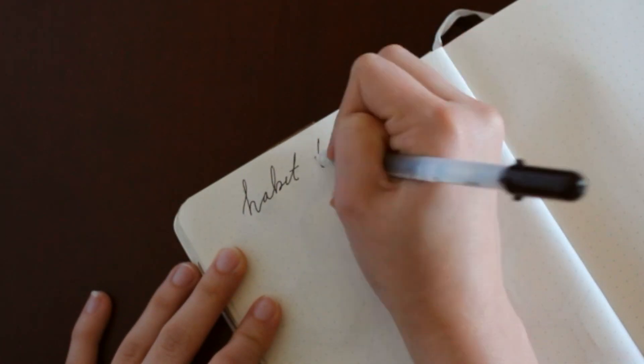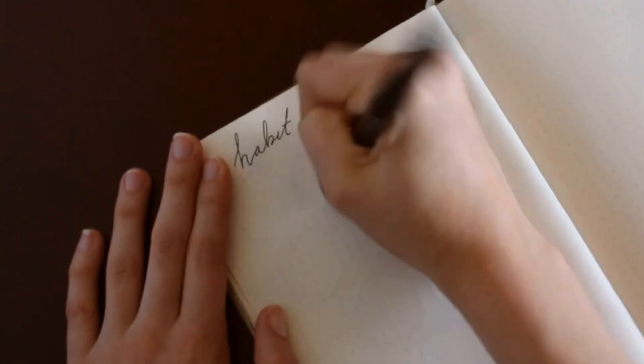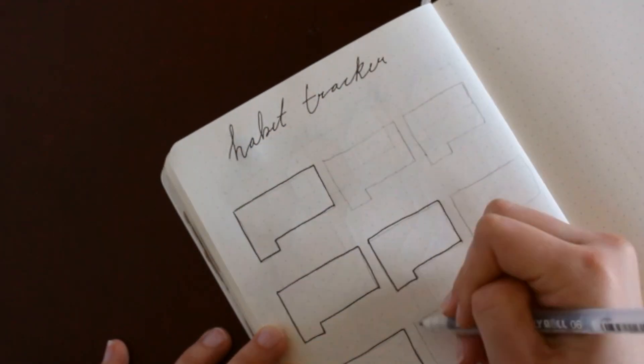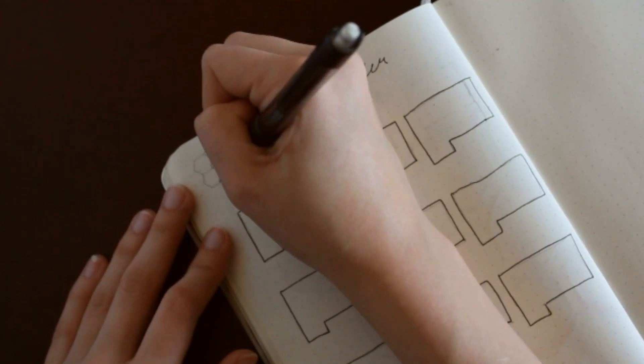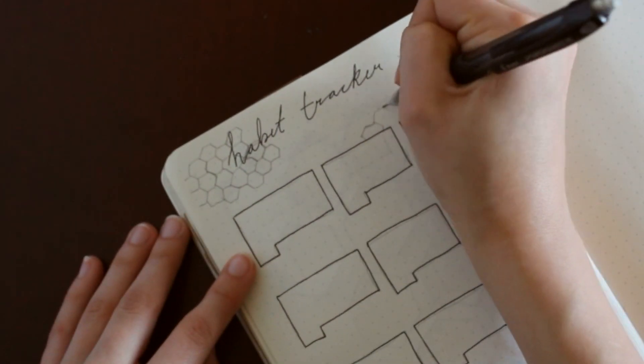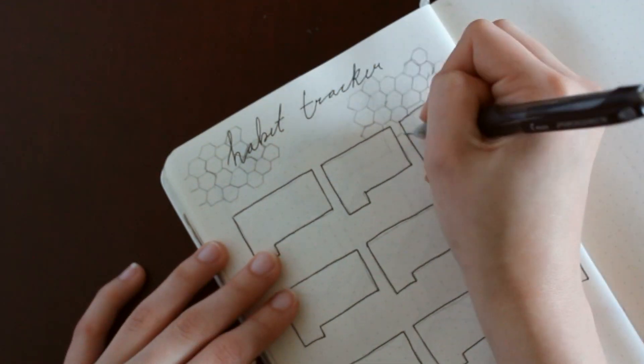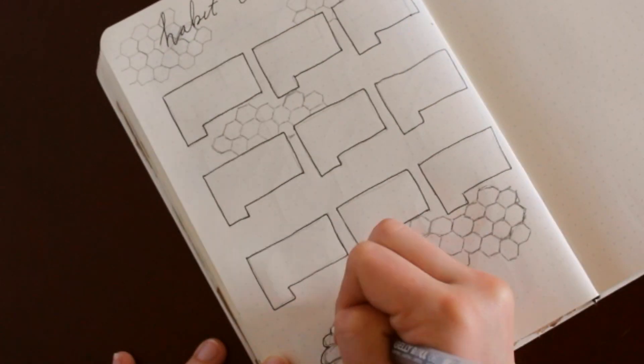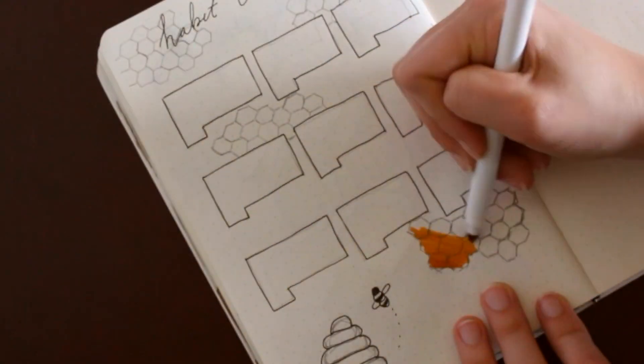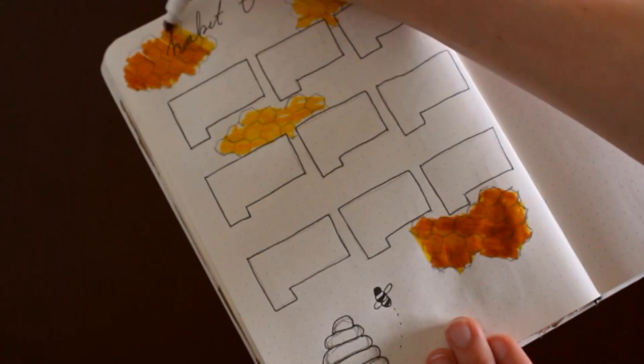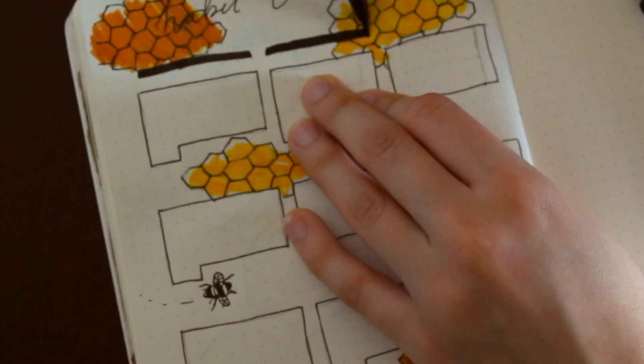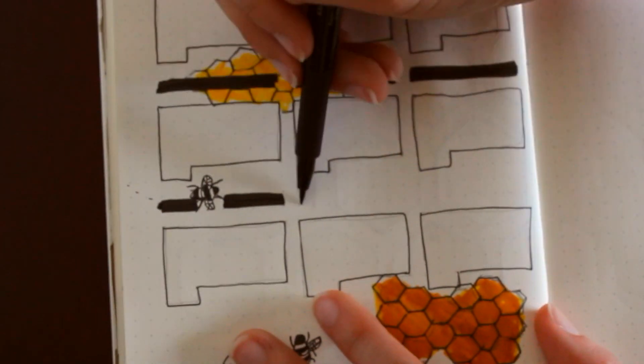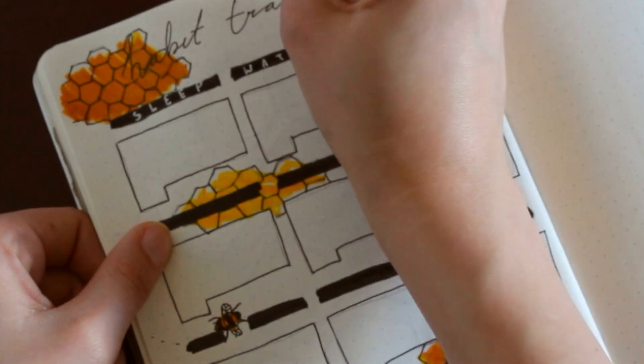On to the next page, we have my habit tracker, and here I'm just doing the same setup I usually do, which is just boxing out the calendar, and then I'm going to add honeycombs in the background. And then going in with one of my brush pens, I'm just boxing out where I'm going to put each of my habits with black, and then going over it with my white ink pen.